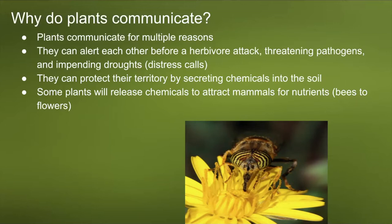Plants can also protect their territory by secreting chemicals into the soil. If a plant senses that weeds or foreign grass are growing next to them and taking up space where their roots could grow, they will secrete chemicals into the soil to harm them. If a plant senses another plant will grow over and block its sunlight, it will do the same. Some plants also release chemicals to attract pollinators — for example, bees to flowers — because of their mutual relationship.